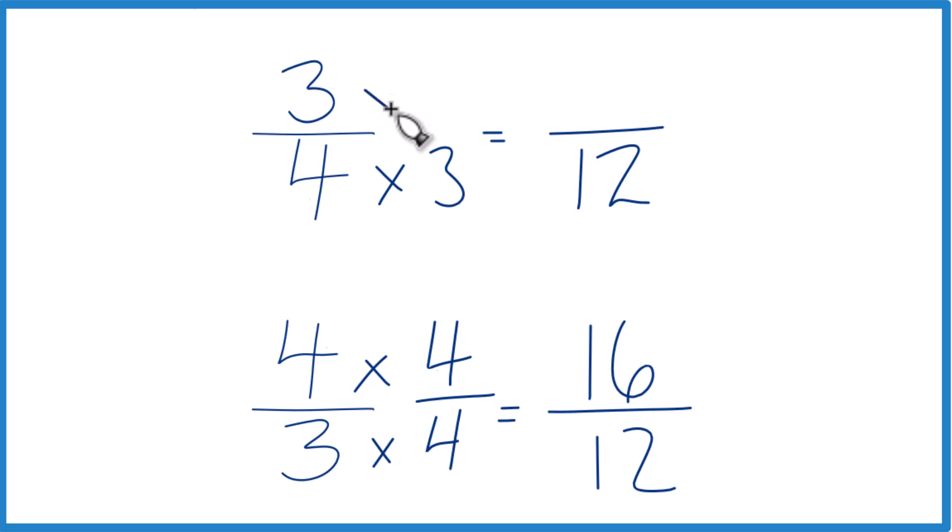Up here, we'll multiply by 3. And that'll give us 9. And now, since we have the same denominator, we compare the numerators. And you can see that 16, that's larger than 9. So 16 twelfths, that's larger than 9 twelfths. And because these are equivalent here and here, 4 thirds, that's larger than 3 fourths.